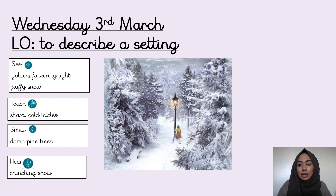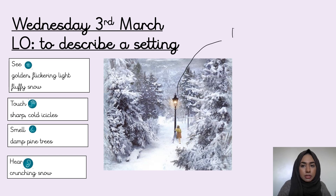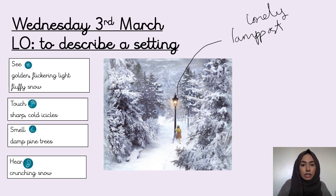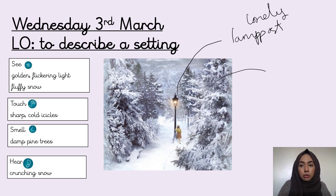I'm also now looking at the picture to find some ideas from the picture itself. Over here I can see a lamppost, and it's all by itself — I would describe it as a lamppost. Then over here you can see lots of trees. If you look at this lamppost, it's quite tall, but the trees are much, much taller. So I'm going to describe them as towering trees.